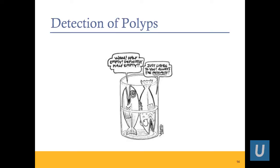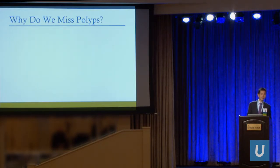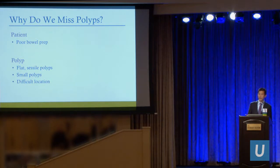So now let's talk about detection of polyps. Why do we miss polyps or why are ADRs low? We can blame the patient — poor bowel prep. We can blame the biology of the polyps: they're flat, sessile, we're not as good at detecting polyps in the right colon. They're small or in a difficult location, behind a fold. So you can blame the polyps themselves for why patients develop interval cancer.